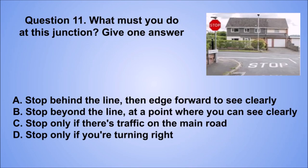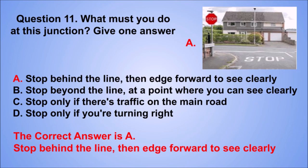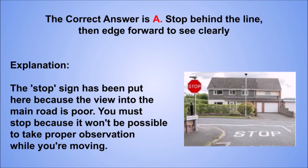Question 11. What must you do at this junction? Give one answer. A. Stop behind the line, then edge forward to see clearly. B. Stop beyond the line, at a point where you can see clearly. C. Stop only if there's traffic on the main road. D. Stop only if you're turning right. The correct answer is A, stop behind the line, then edge forward to see clearly. The stop sign has been put here because the view into the main road is poor. You must stop because it won't be possible to take proper observation while you're moving.